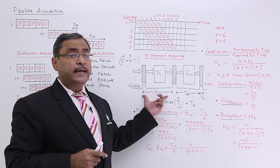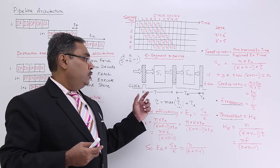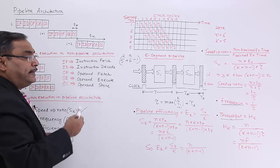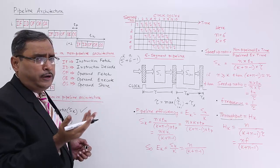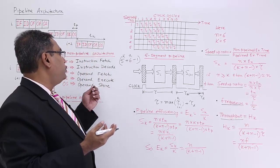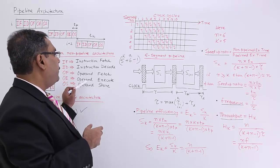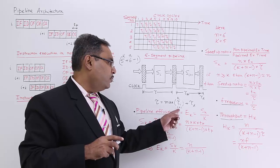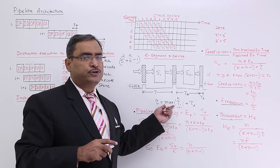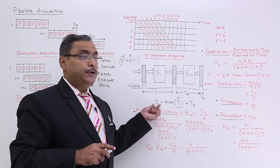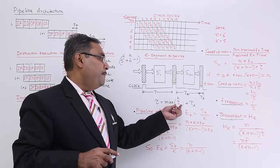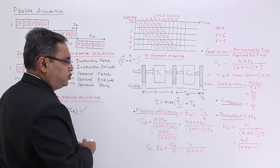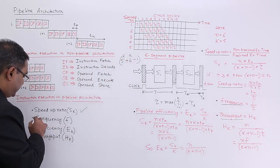Tau is the clock cycle period. Different phases will have different durations — we cannot ensure all phases take the same amount of time. Therefore, it is common practice that for all k phases, the clock period is set to the maximum phase duration plus the latch delay: tau = max(phase durations) + Td. The frequency is then f = 1 / tau.